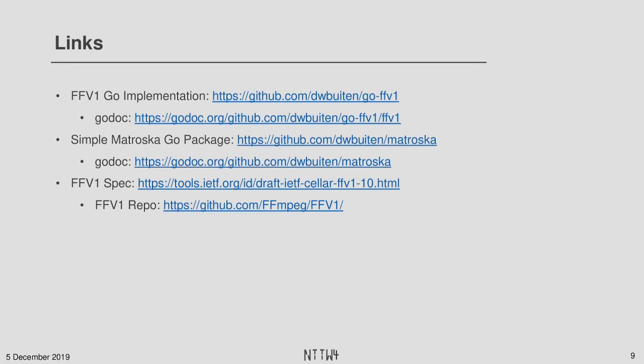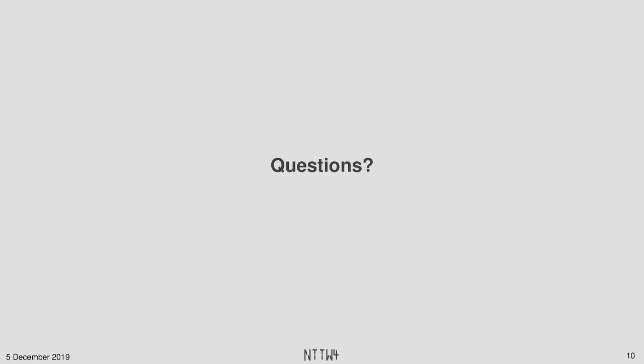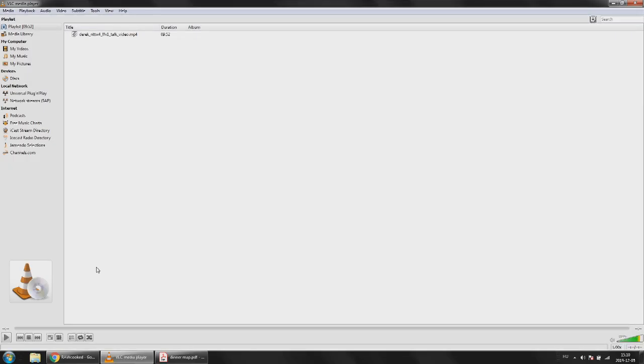And here's some links to the implementation, its documentation, a little simple Matroska wrapper I wrote, because it turns out Go has really crappy Matroska packages. So I kind of just wrapped Holly's Matroska parser and used that to get my packets out. And of course, the spec. I guess we'll open it up to questions now. And again, if you have any questions, he's on the live stream chat. Thank you, virtual Derek.